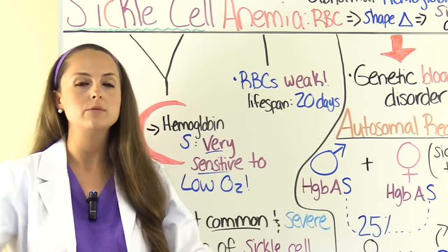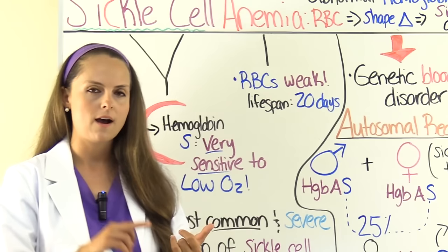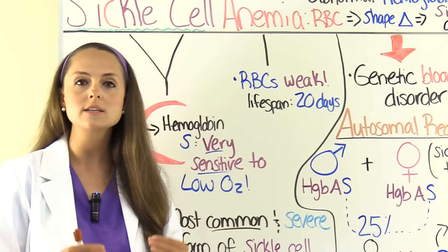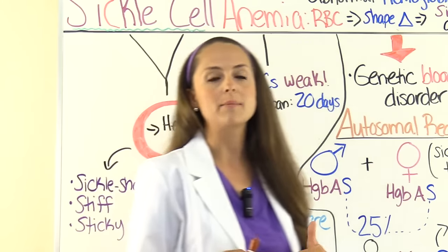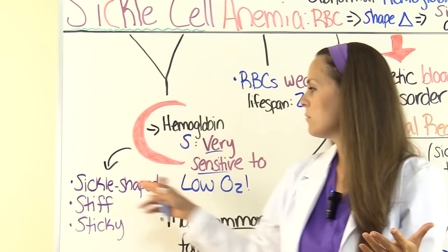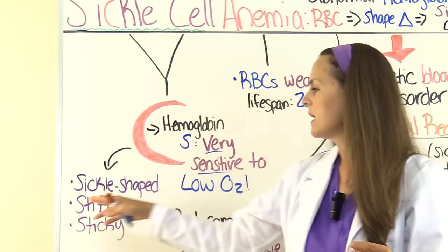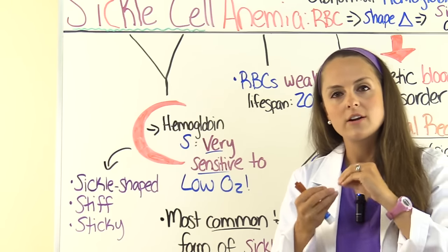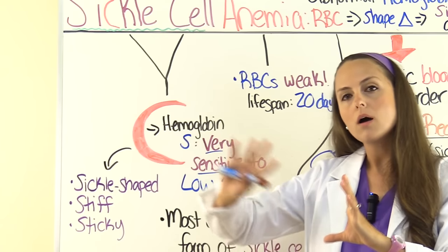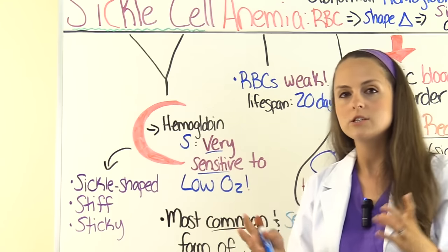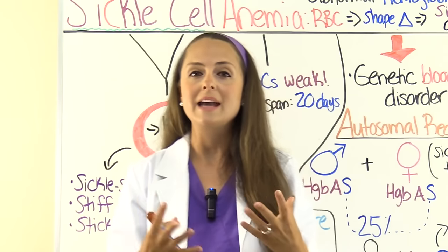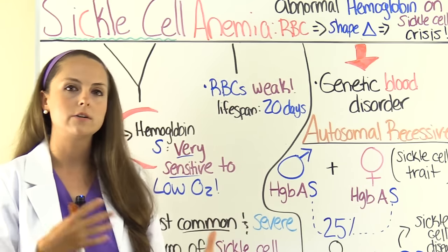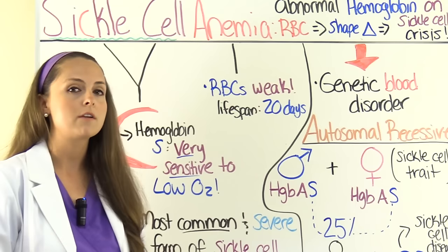Anything that causes the body to increase its demands for oxygen — like going to a higher altitude, infection, or dehydration — will cause these red blood cells to change their shape. When they change their shape, they become sickle-shaped like a C. They become stiff and sticky, and if they stick together in circulation, they will block blood flow to important organs and tissues, sending the patient into sickle cell crisis.